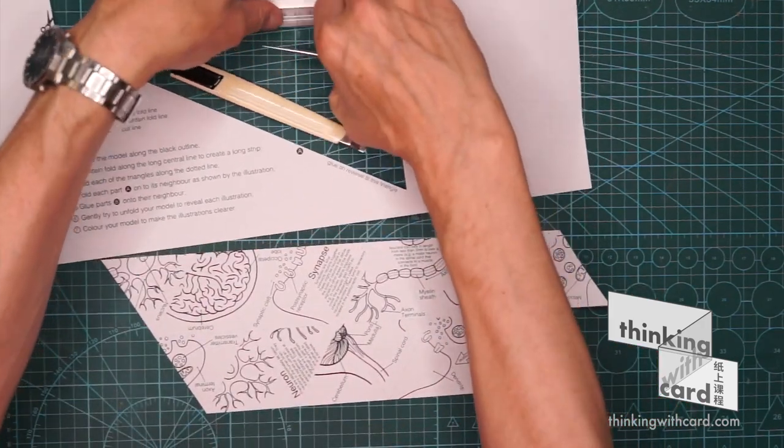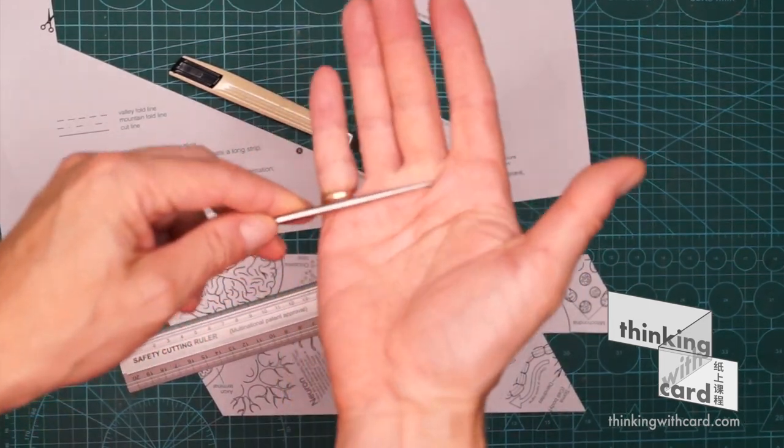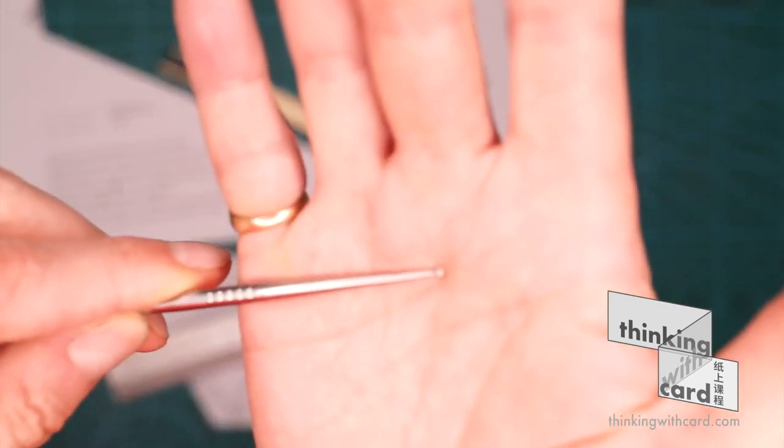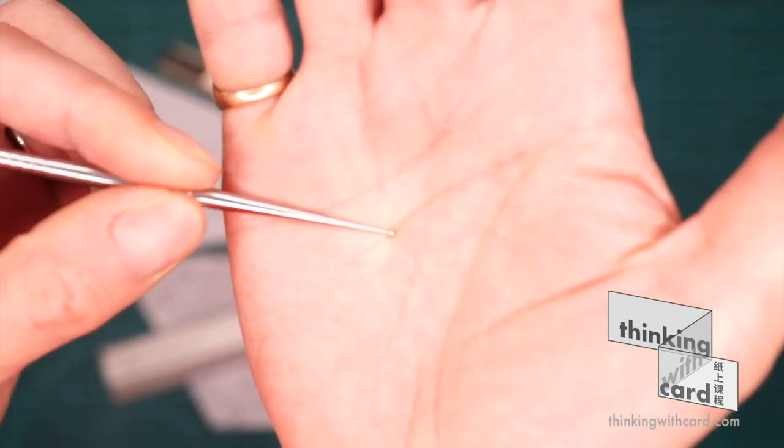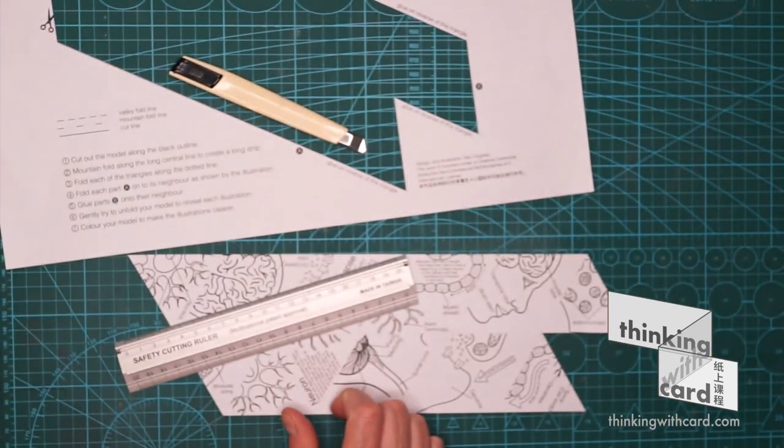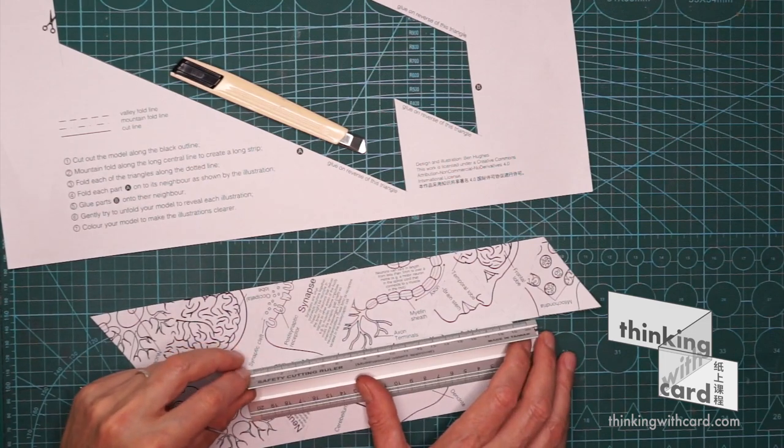I'm going to use this tool, which is a folding tool. It has a ball bearing on the end, a ball bearing of different sizes. And that just helps to weaken the fibres in the paper, which makes it easier to fold. So it's helpful when making this kind of model.